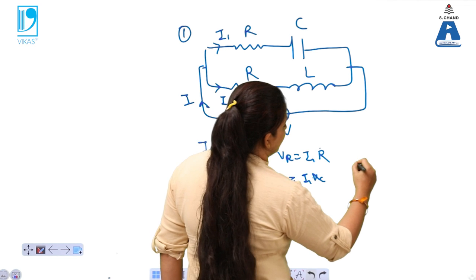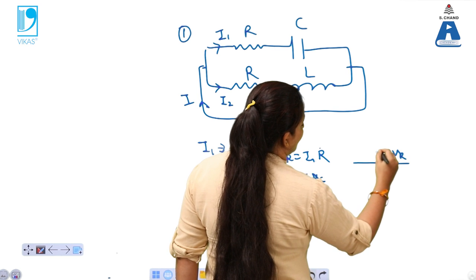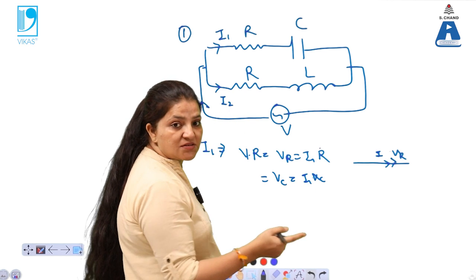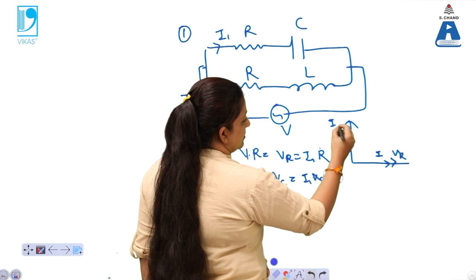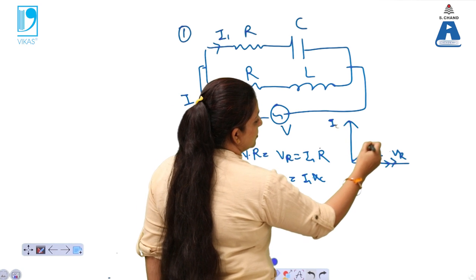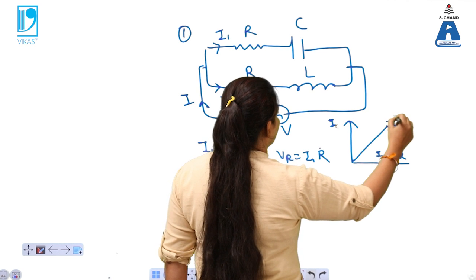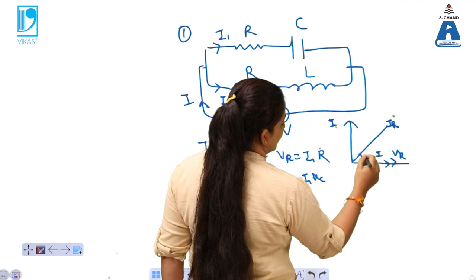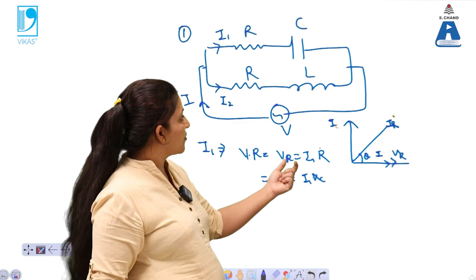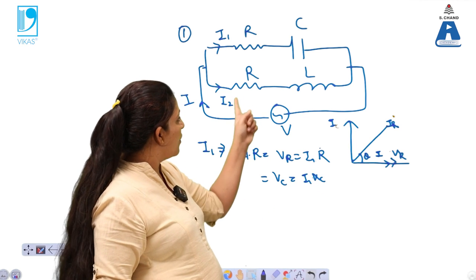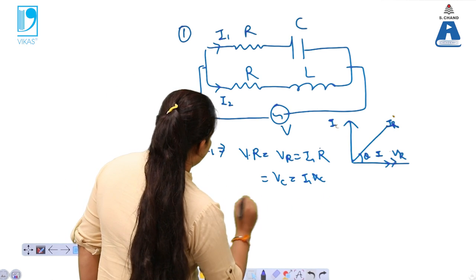To plot the phasor diagram for I1: VR is along the reference, and in the case of a capacitance the current IC leads the voltage. The resultant of these two gives IR1, which makes an angle theta with the reference. For the I2 branch, the voltage drop across R is I2 × R and across the inductor is VL = I2 × XL.